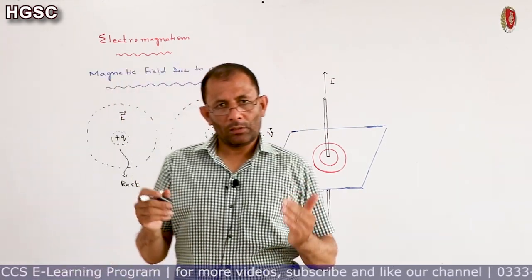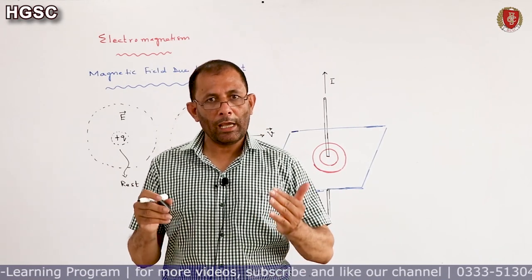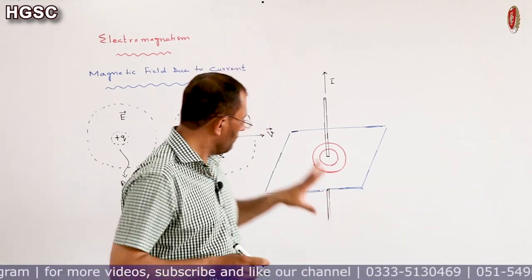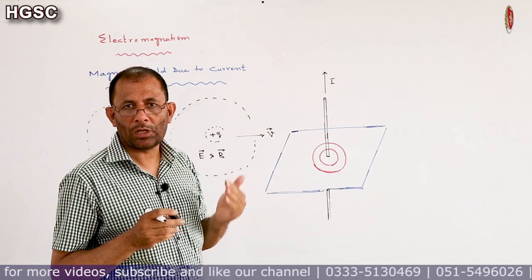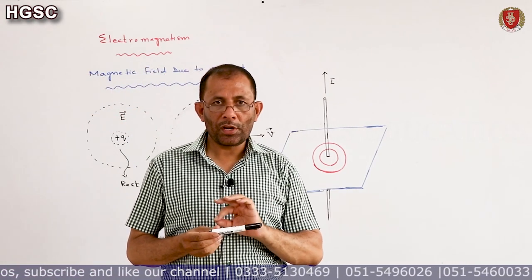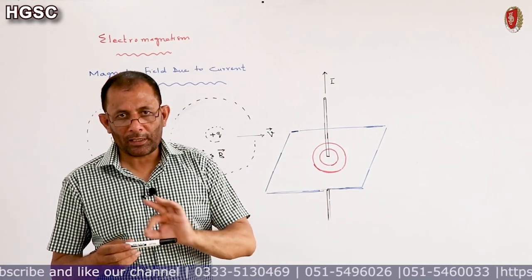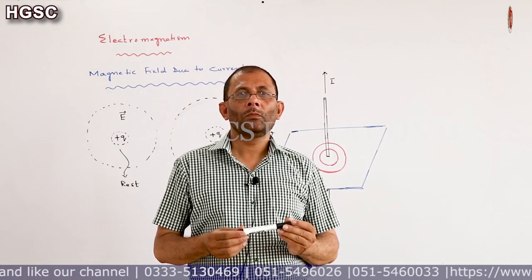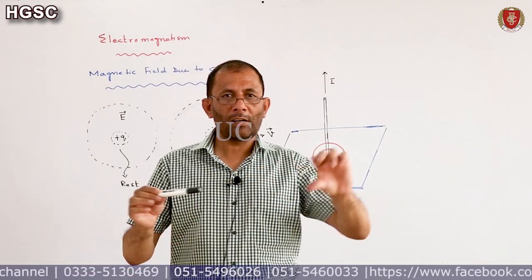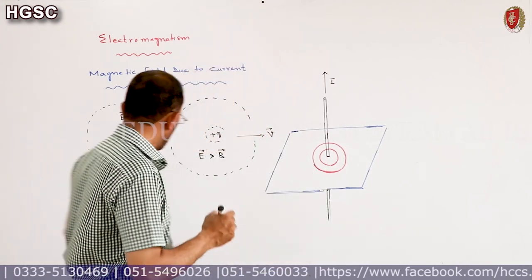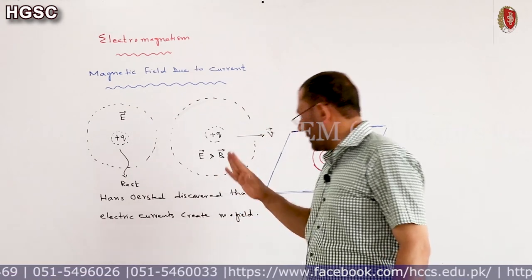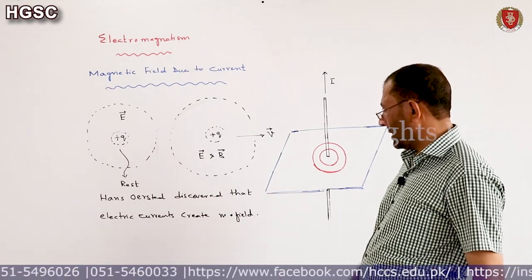This was first discovered by Hans Oersted. Hans Oersted told us that electric currents create magnetic fields. Because current is actually the flow of moving charges — when charges drift through a conductor we say current is flowing. Since a moving charge has a magnetic field, it means when current passes through a wire, it produces a magnetic field. Hans Oersted discovered that electric currents create magnetic fields.